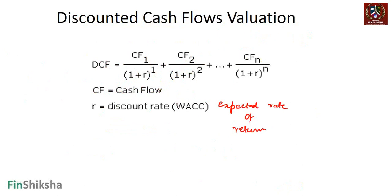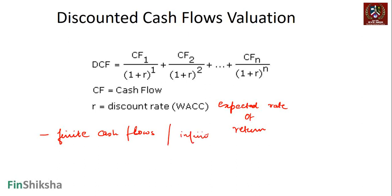Depending on the cash flow type, the expected rate of return could be a cost of capital or cost of equity. However, a simple NPV analysis has finite cash flows — three, five, or seven years — whereas companies differ from this.